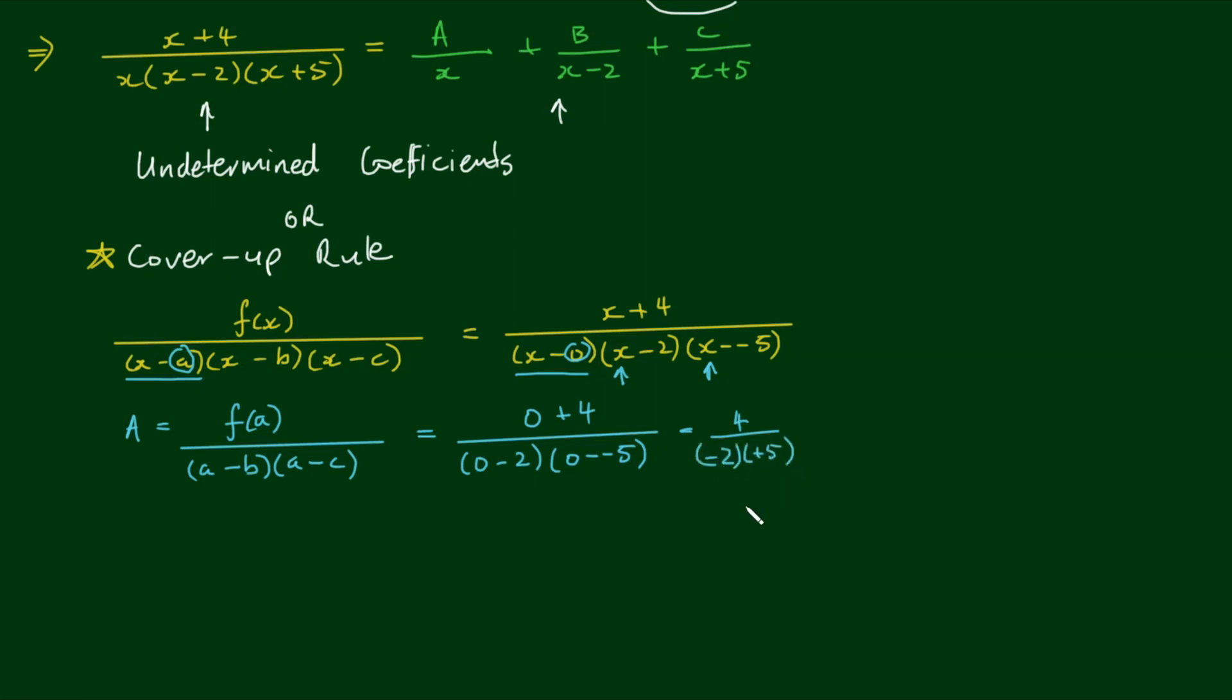For the constant B, cover up the factor x minus b, take the number 2. We have f of b divided by b minus a times b minus c. This yields 2 plus 4 on top divided by 2 minus 0 times 2 minus negative 5, which gives 6 on 2 times 7, which simplifies to 3 on 7.